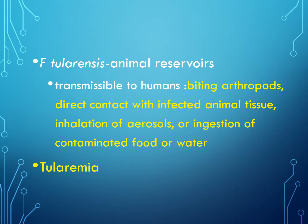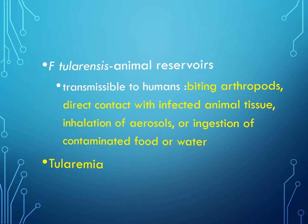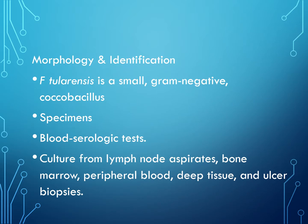Next is Francisella tularensis, which has animal reservoirs. Humans are infected by biting arthropods, by direct contact with infected animal tissues, inhalation of infected aerosols, or ingestion of contaminated material. The condition produced by Francisella tularensis infection is called tularemia. Francisella tularensis is a small Gram-negative coccobacillus.